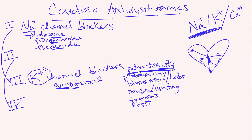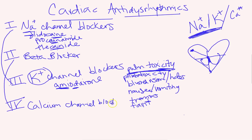One and three go together as sodium and potassium channel blockers. Two and four go together: class two is a beta blocker and class four is a calcium channel blocker. I put two and four together because beta blockers and calcium channel blockers both affect the conduction of electricity in your heart. Beta blockers decrease AV node conduction and also decrease the amount that your SA node fires, lowering your heart rate. This is good for people in A-fib — it decreases signals through the AV node and reduces ventricular response.